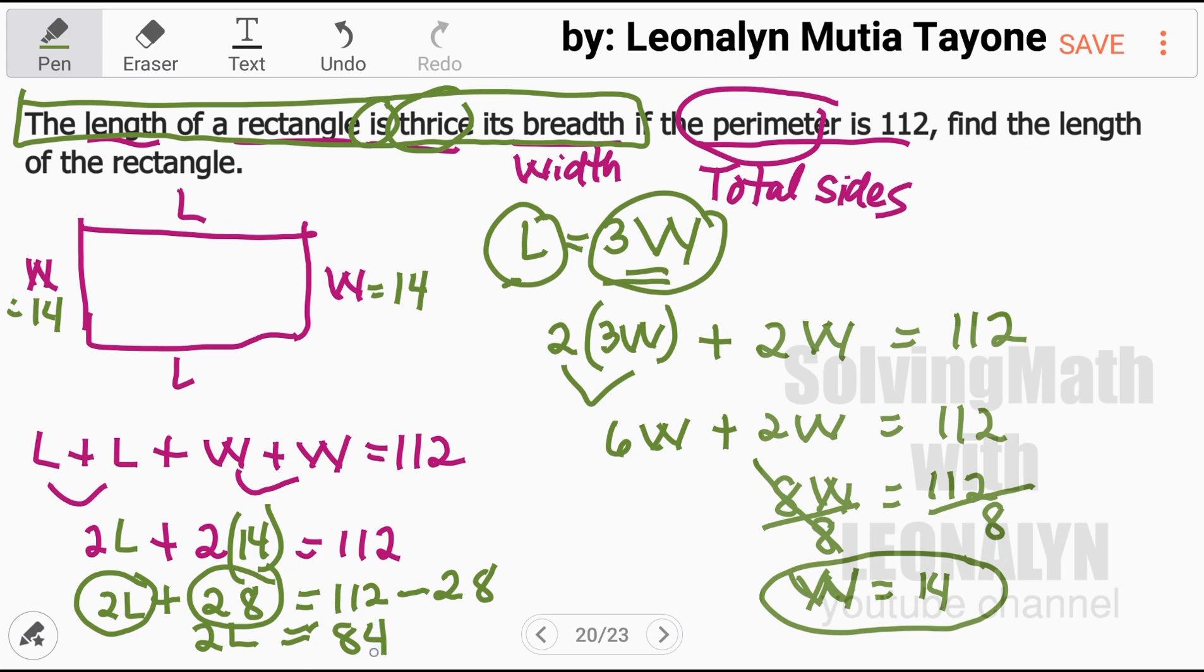And what remains is 2L. So 2L equals 84. To isolate L here, since 2 is multiplying L, it now divides our 84. So 84 divided by 2, that is 42.